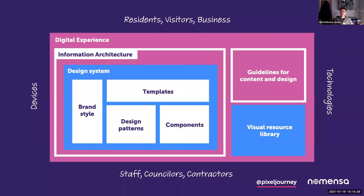Another way to get a grasp on the landscape of digital experiences is to look at this little diagram. If we look at the experience as a whole, we tend to frame experiences with information architecture - the structure of information that informs navigation and how to find information. Within that we have a systemised approach to design. Within a design system we can have branding styles applied across components, which build up to patterns and templates, guided by governance of content and design guidelines. This allows you to build that connection between residents and staff.